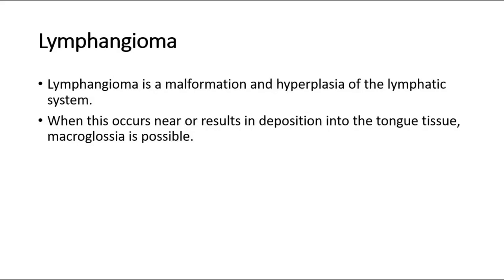For lymphangioma, it is a malformation and hyperplasia of the lymphatic system. When this occurs near or results in deposition into the tongue tissue, macroglossia is possible. That's all for this video. Thank you.